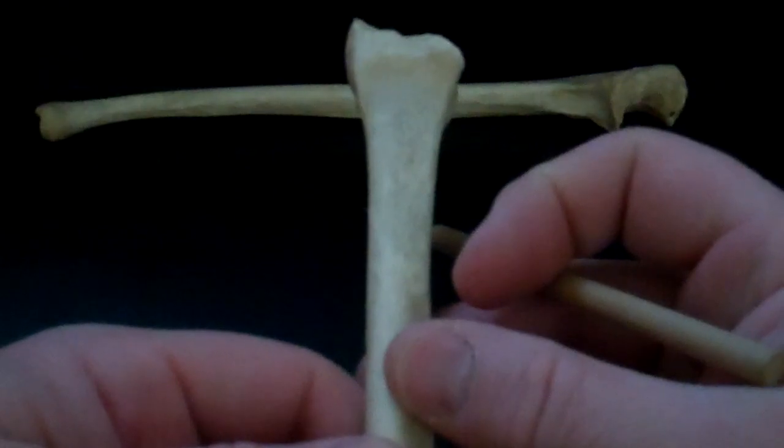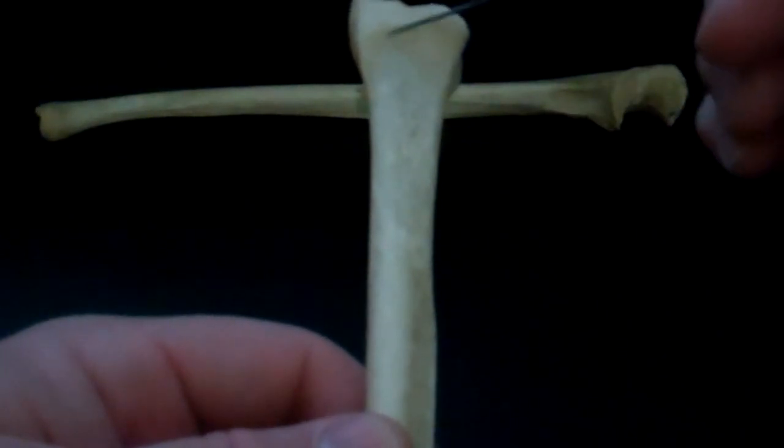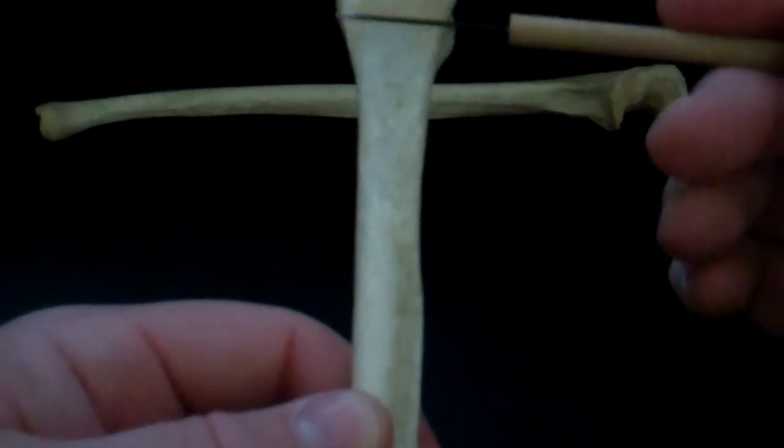The radius is on the left side because the styloid has to point to the thumb and the flat surface goes up. Also, the biceps tuberosity or radial tuberosity has to go up. This is a left radius.